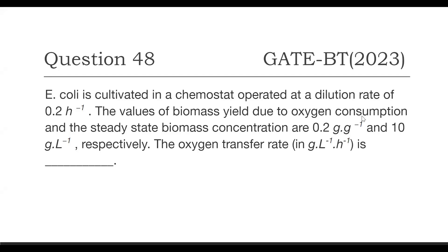Welcome everyone. Today I will be solving question number 48 of the 2023 GATE Biotechnology paper. The question is: if E. coli is cultivated in a chemostat operating at a dilution rate of 0.2 per hour, and the value of biomass yield due to oxygen consumption is 0.2 gram per gram, and the steady state biomass concentration is 10 gram per liter, what is the oxygen transfer rate in units of gram per liter per hour?